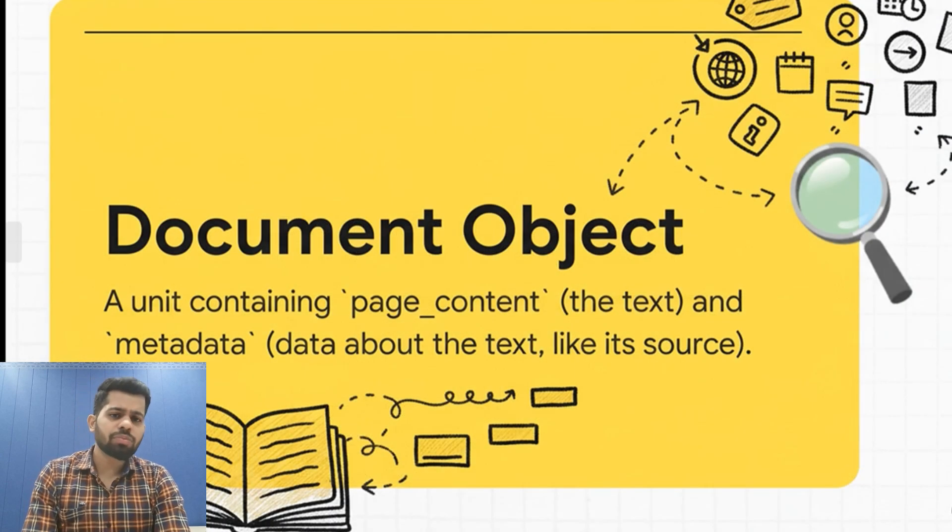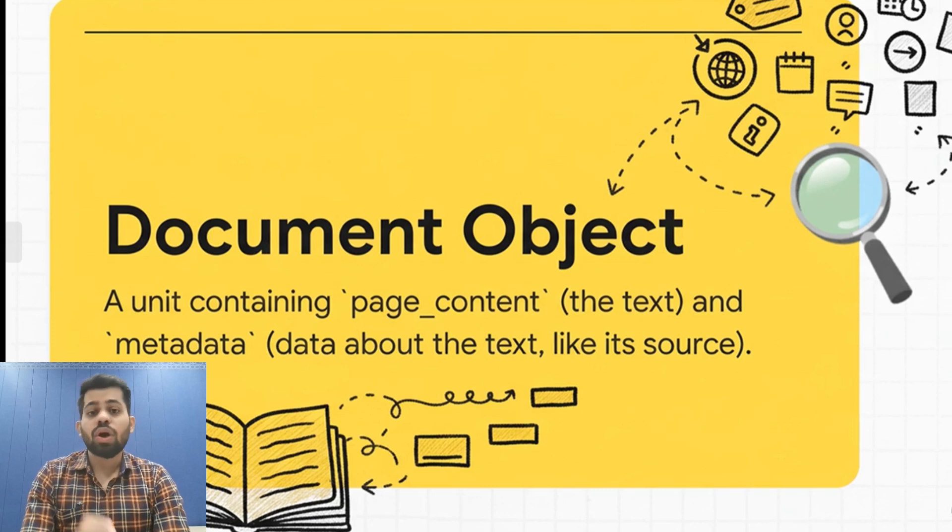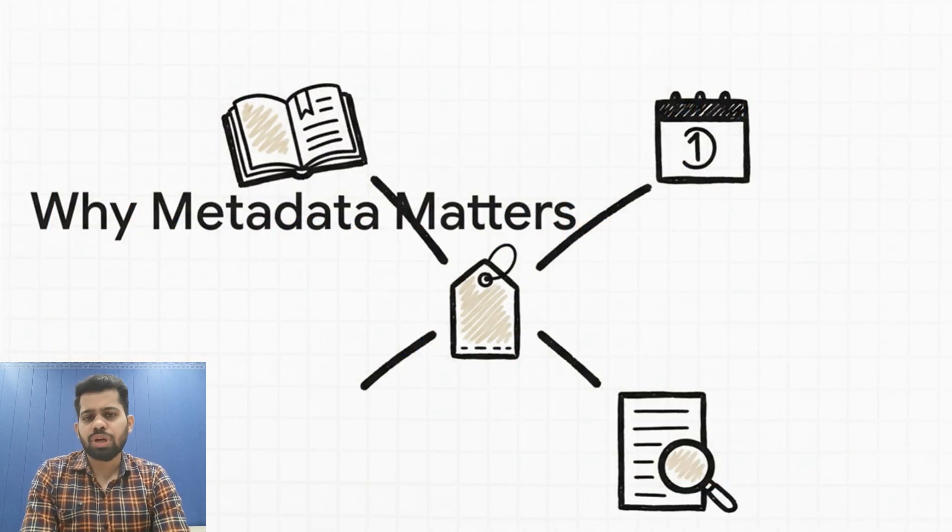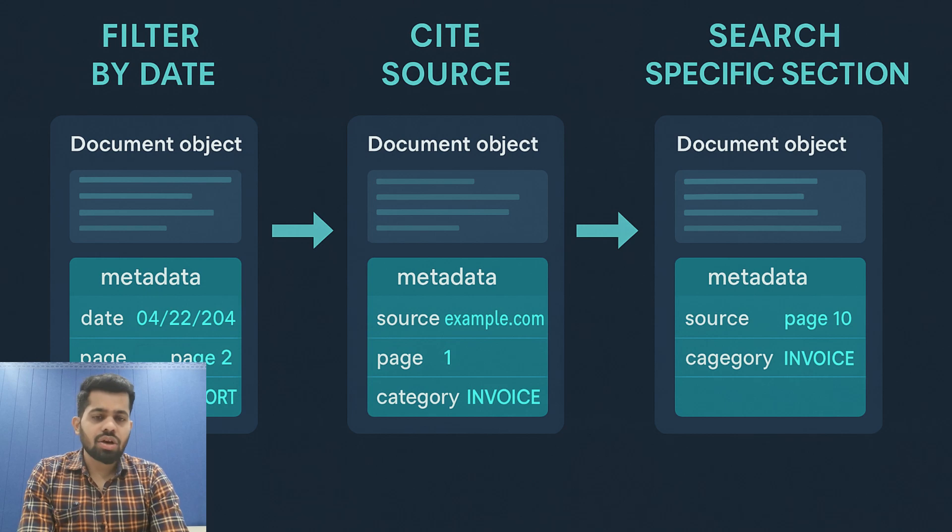A document object has two parts: page content and metadata. Page content has the actual text, while metadata stores information about the text like source, page number, date, etc. Why is this metadata so important? Because later, when you are retrieving information, you might want to filter by date or cite sources, or only search specific sections. Metadata makes all of that possible.